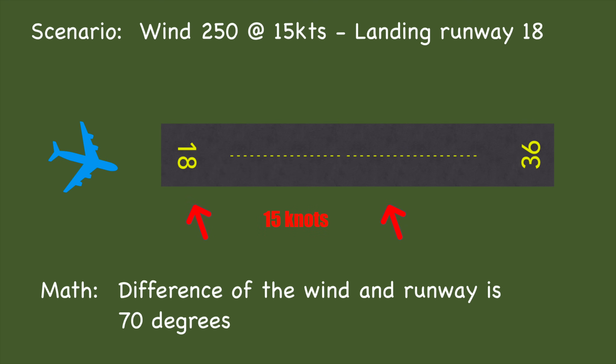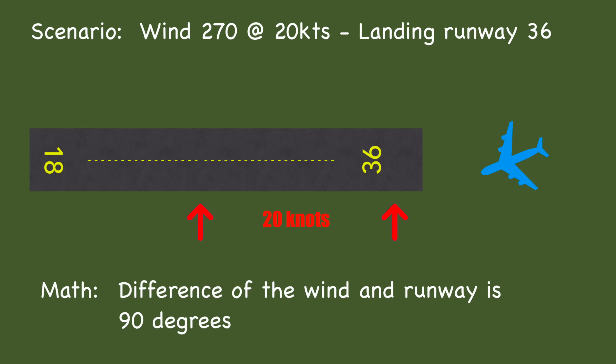Second scenario: you're landing runway 18, the wind is 250 at 15 knots — 25 minus 18 is 7 — so your difference is 70 degrees. You're landing runway 36, wind is 270 at 20 knots, so your difference between 36 and 27 is 90 degrees. That's the first thing you need to establish when calculating your crosswind component: what is the difference between the runway you're landing on and the direction of the wind?